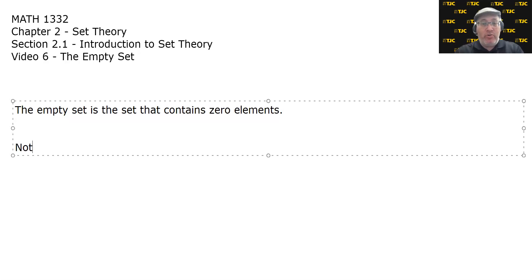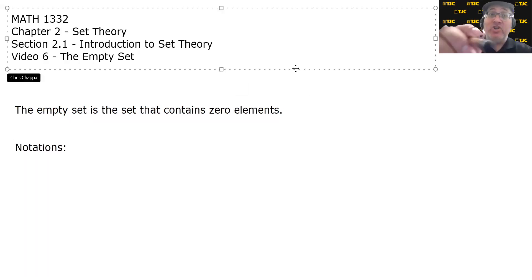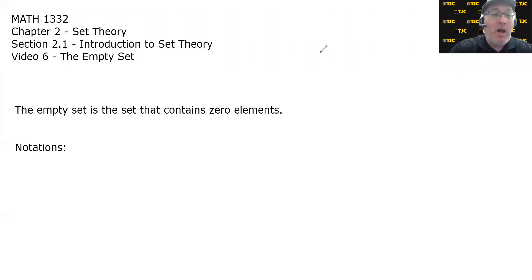But there are two notations for the empty set, or at least two notations that we're going to see. In other courses, there are other notations for the empty set. First, notation number one is literally a set in roster, using the roster method, that is literally empty. Let's see if I can draw that a little bit better. There we go. It is literally empty. Literally empty. There's nothing in it.